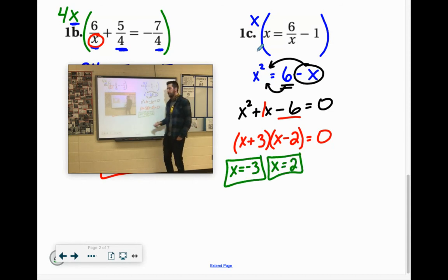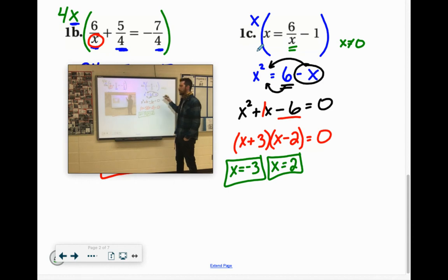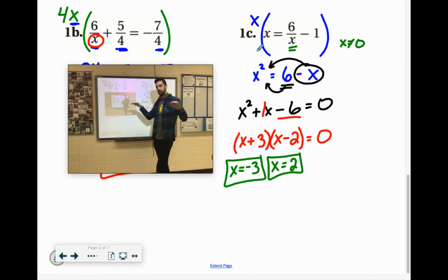Now check. Remember, the only extraneous solution on here would be if it came out to 0. The only thing x could not equal for sure from the get-go would be 0. And neither one worked out to 0, so they're both good.